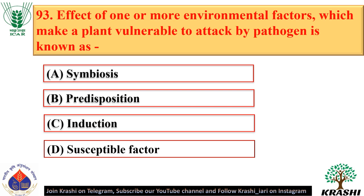Question number 93. The effect of one or more environmental factors that make a plant vulnerable to attack by a pathogen is known as predisposition — option B.